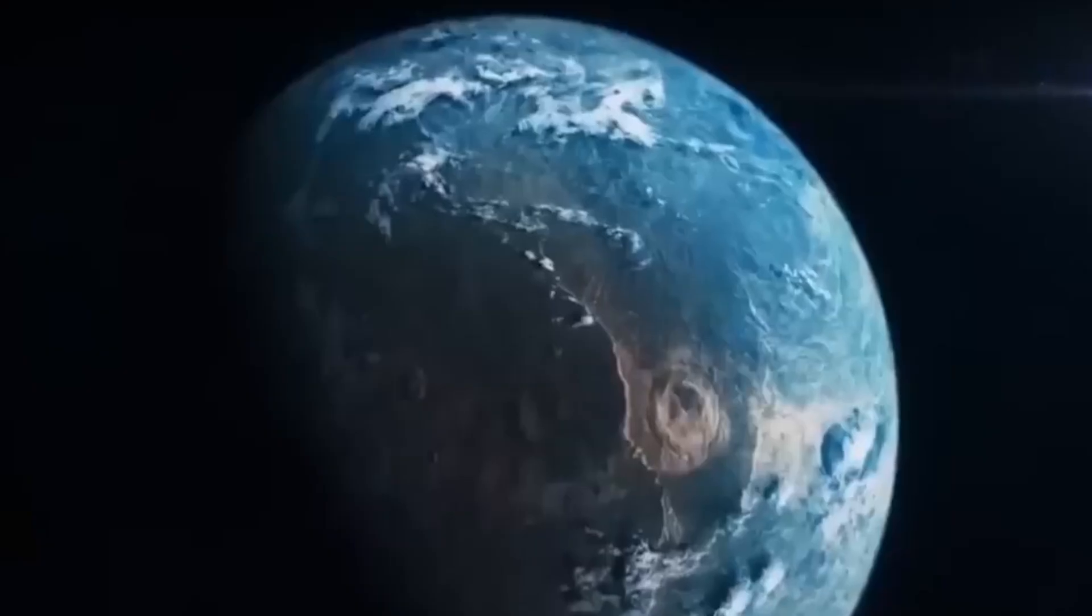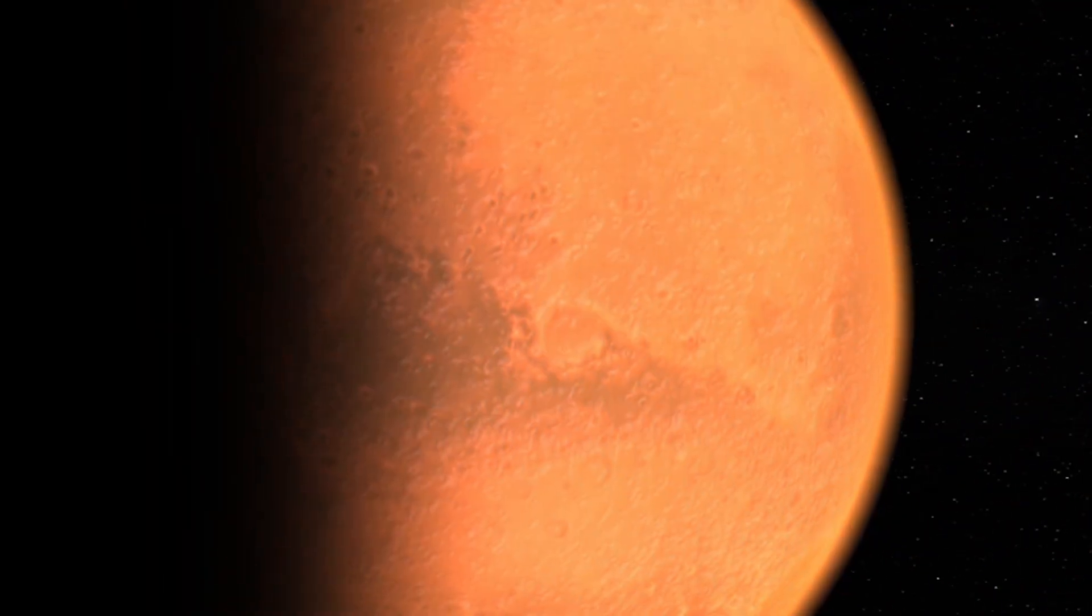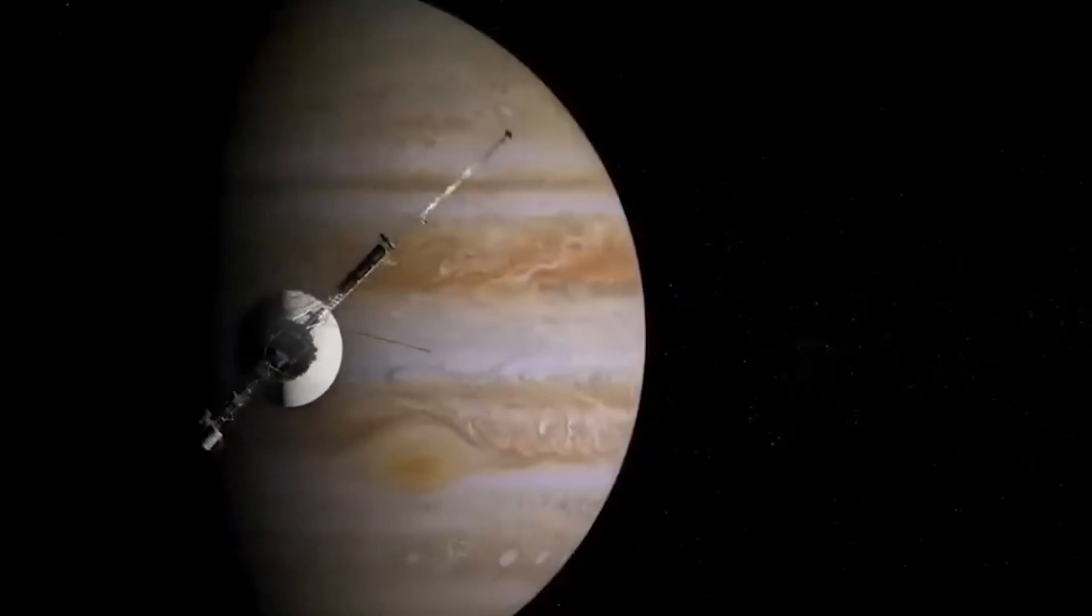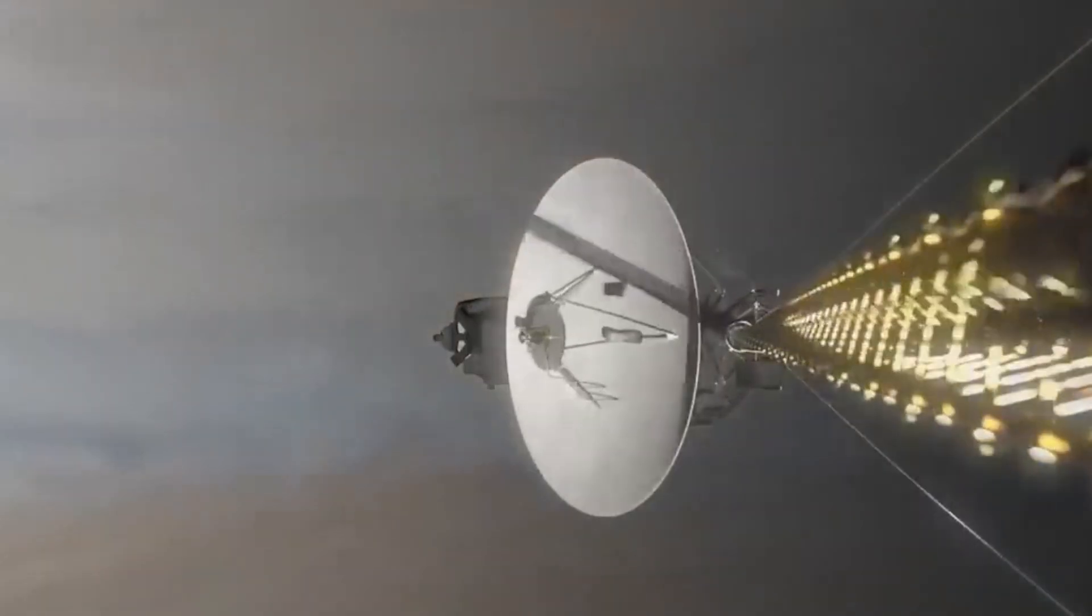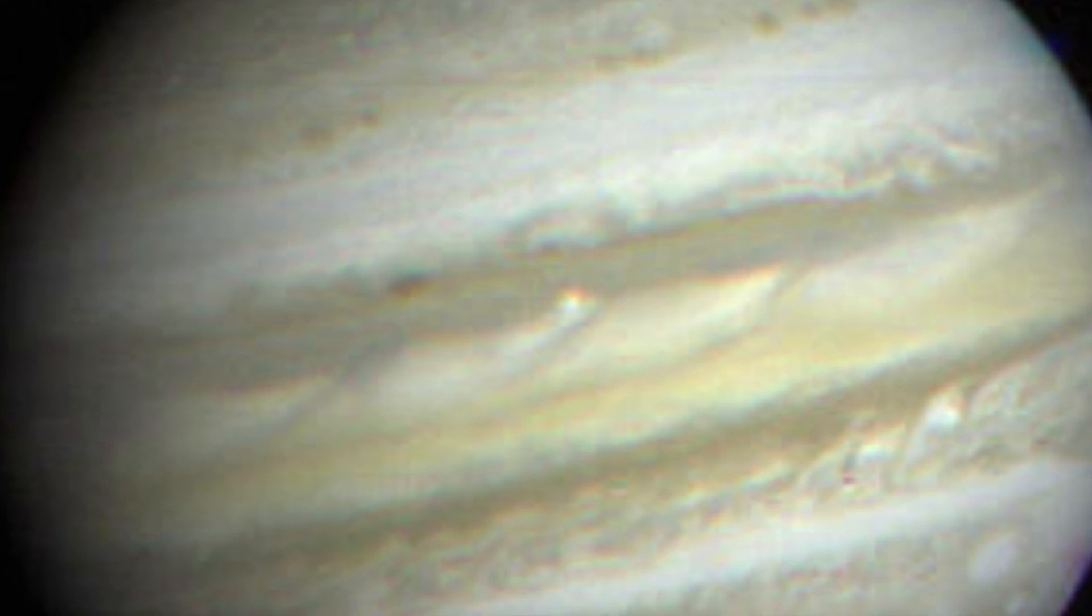The probe arrived at the main asteroid belt between Mars and Jupiter in January 1978, at a distance of 165 million miles away from Earth. This marked the beginning of the Jovian imaging mission. During this mission, Voyager 1 sent its first picture of Jupiter back to Earth.